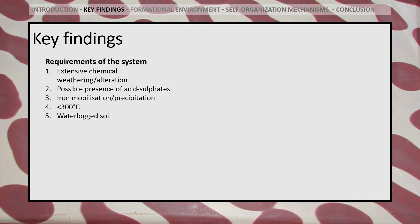With all this in mind we can begin to construct an idea as to what the conditions were like during the formation of zebra rock patterns. The process in question must involve extensive weathering or alteration of the original rock or soil, of which acid sulfates may play a significant part. The process must also involve the mobilization and precipitation of large quantities of iron, and occur at temperatures lower than 300°C.